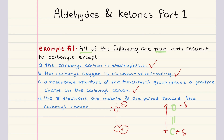Option D states that the pi electrons are mobile and they're pulled toward the carbonyl carbon. This statement is incorrect — it is false. In reality, the pi electrons of the carbonyl group are pulled towards the more electronegative oxygen atom, not the carbon. This electron delocalization strengthens the dipole moment, making the oxygen partially negative and the carbon partially positive. So the only false statement is D.